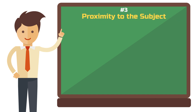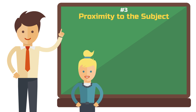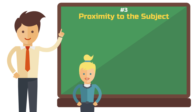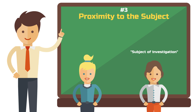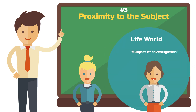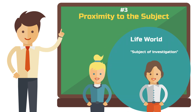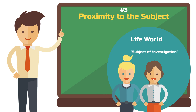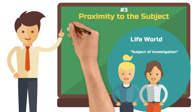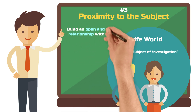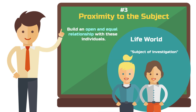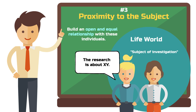Criterion number three: proximity to the subject. In any type of qualitative research, it is important to establish proximity to the subject of investigation. You can fulfill this by directly immersing yourself in the so-called life world of the people you study. Instead of bringing research subjects into a lab, you go into the everyday situations of the people you interview or observe. It is also important to establish an open and equal relationship with the person being studied. You must clearly explain to your participant what your research is about and why you do it.